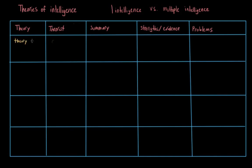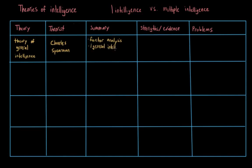The first theory I want to talk about is the theory of general intelligence, which was put forth by a man named Charles Spearman. He used factor analysis, which is a statistical procedure, to identify clusters of related abilities. He predicted the idea of a general intelligence, sometimes referred to as the g-factor, or just g. He predicted that this general intelligence could predict our outcomes in varied academic areas. There is actually a lot of evidence to support this — studies have shown that those who score high in one area, like verbal intelligence, also tend to score highly in other areas, like spatial reasoning.